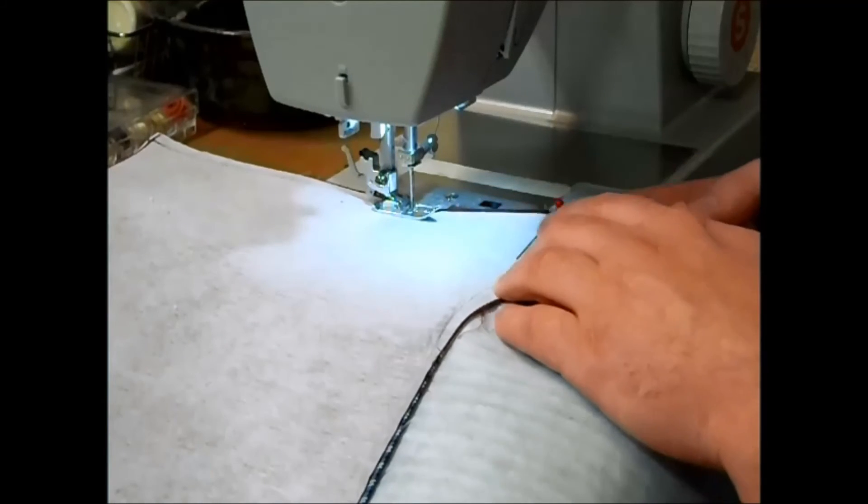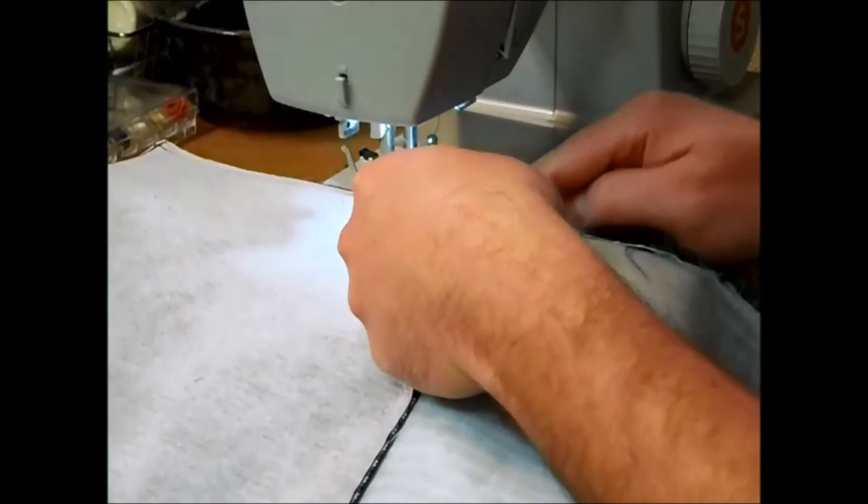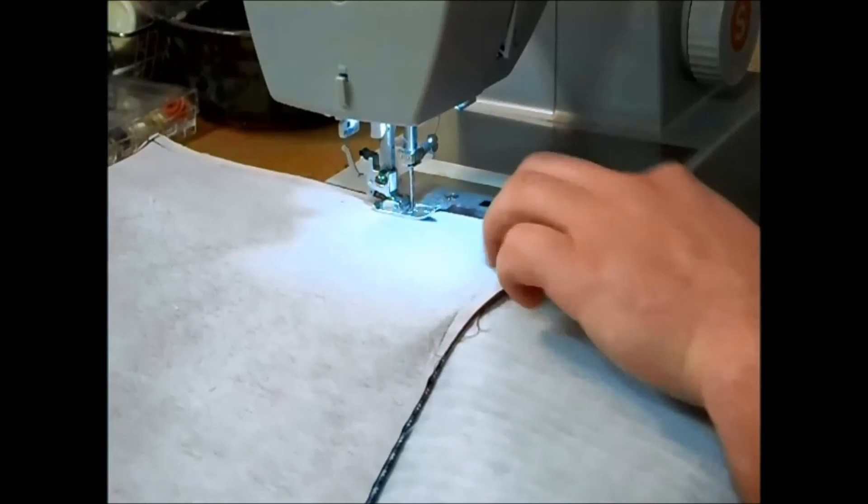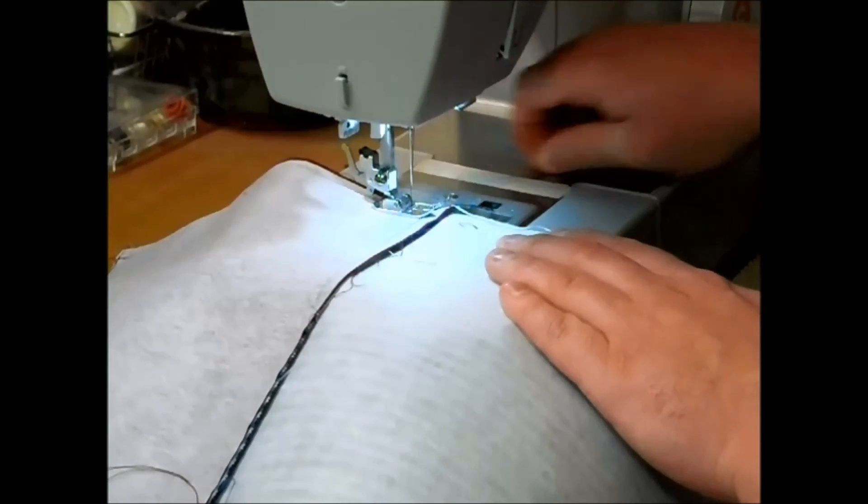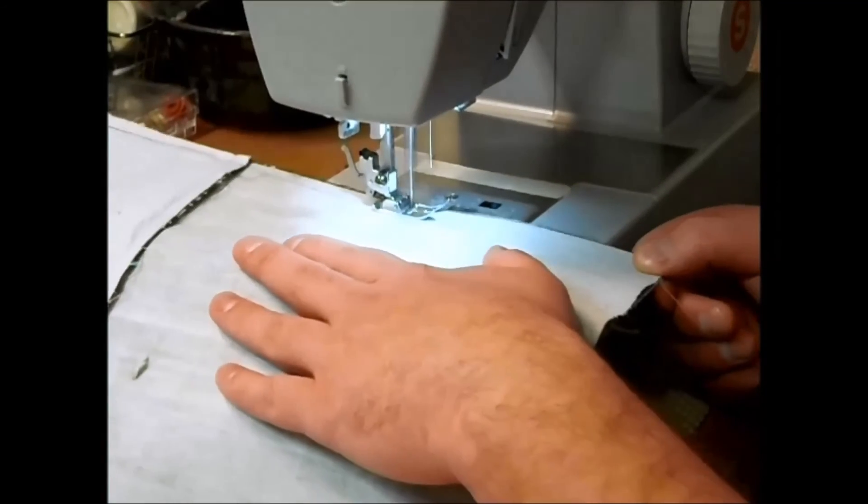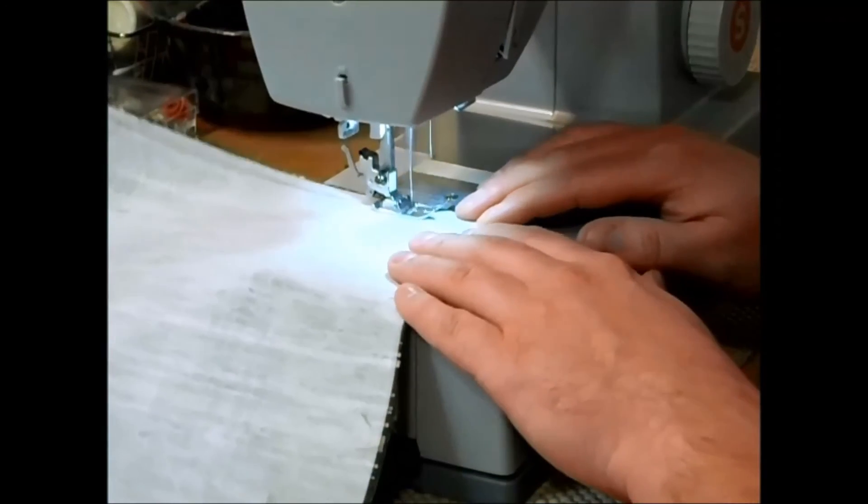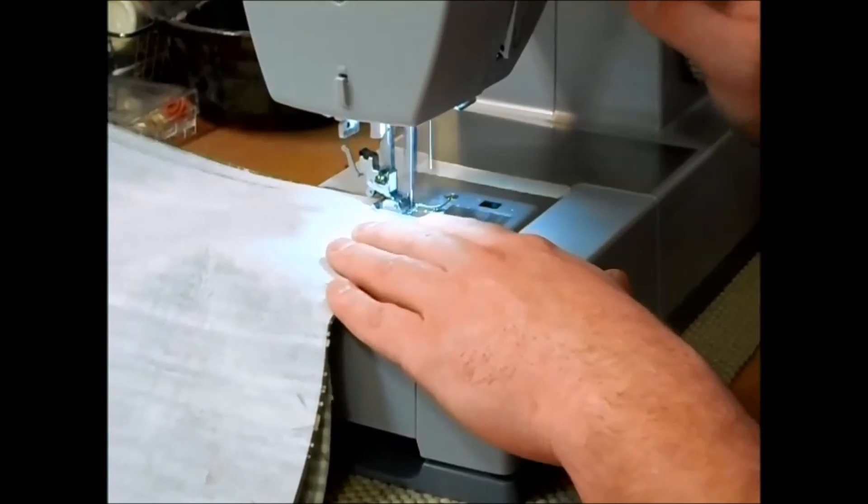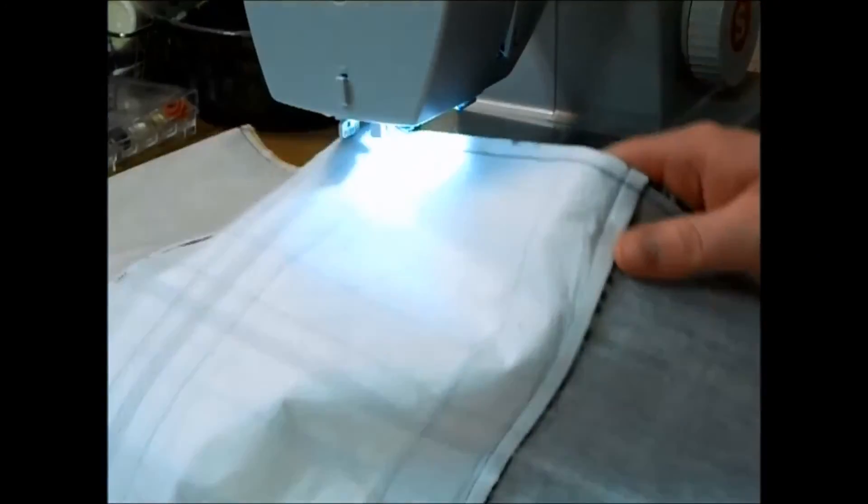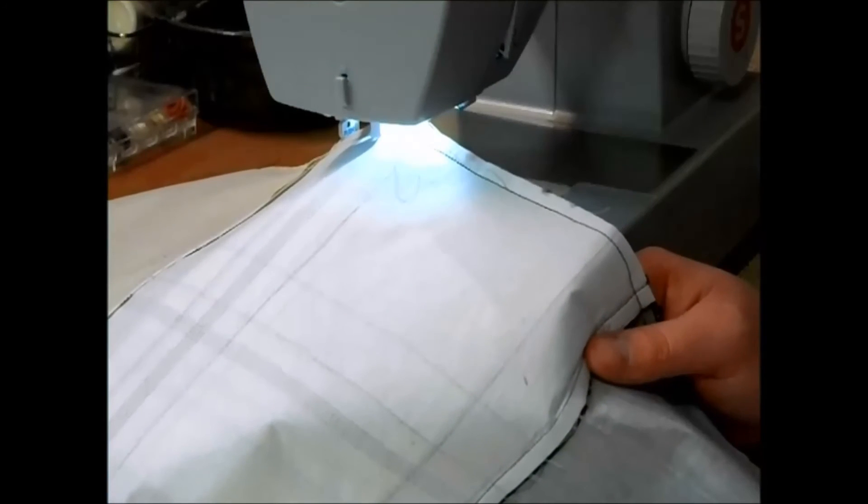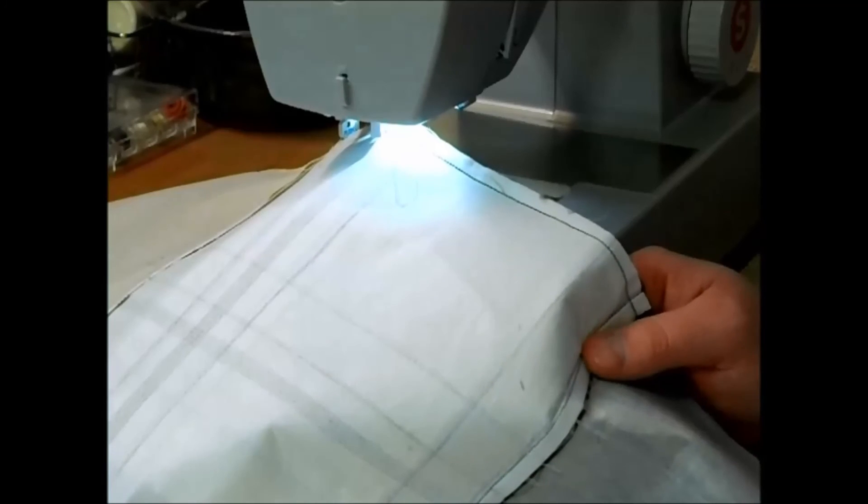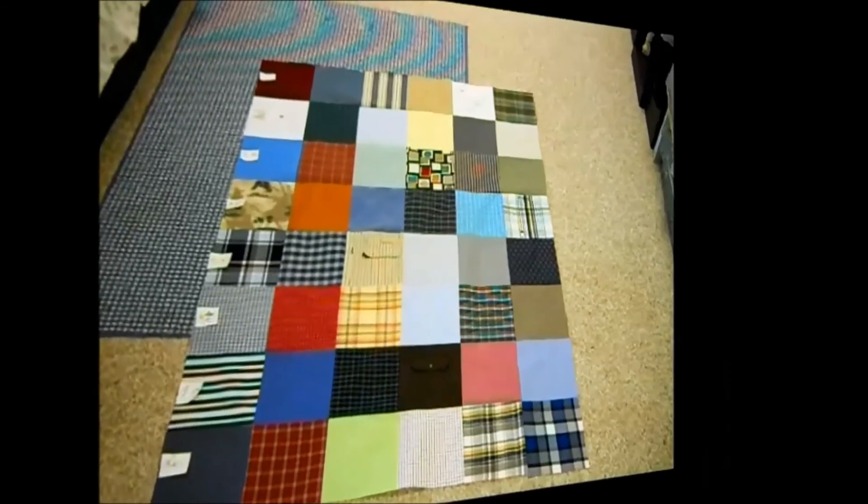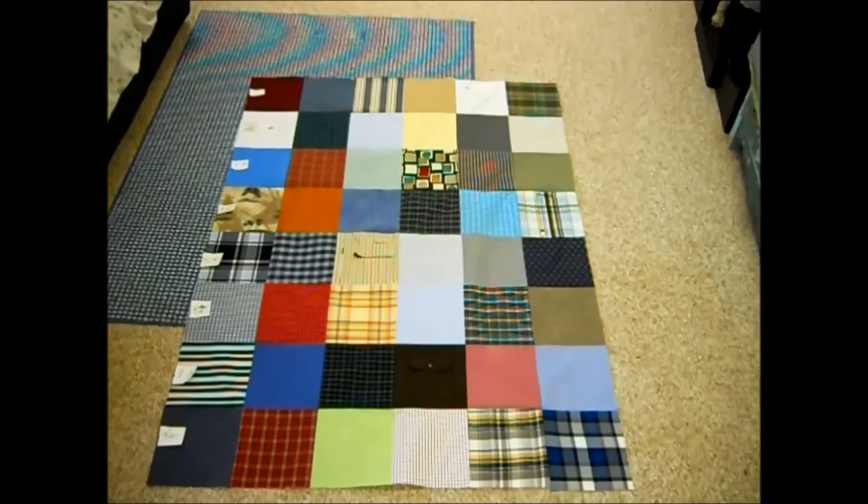When you get to your seams here just make sure that they're still going the opposite direction. Sometimes the one on the bottom likes to flip over and just keep sewing. Now I'm going to take this over to my ironing board and I'm going to press this seam to one side. It doesn't really matter which side you want to press it to at this stage and I'm going to do the same thing until the whole quilt top is sewed together.